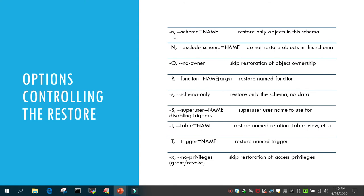You can use -l to mention a file containing a list of tables to restore. You can restore a specific database schema using -n, and -N skips a schema from being restored. With -s (lowercase) you specify schema only, and -S (uppercase) specifies the superuser name. The -t option is used for the table name, and -T is for the trigger name.